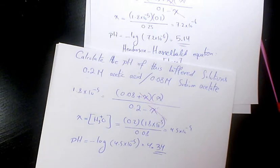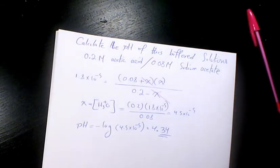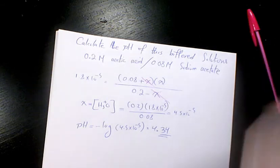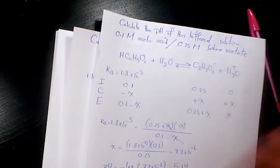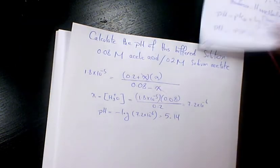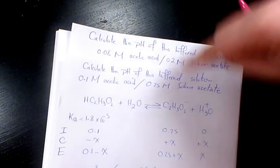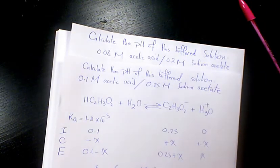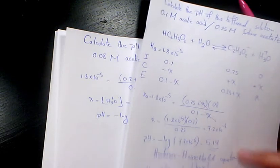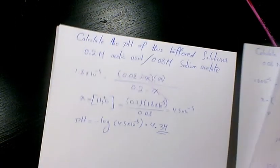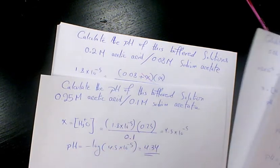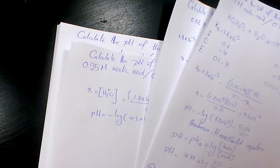We calculated the pH of these four different solutions. Something very interesting: the pH of parts A and C are the same at 5.14, and the pH of parts B and D are the same at 4.34. Even though the concentrations are different, the ratio of acid to conjugate base concentration is the same in each pair — so the pH remains the same. I hope you enjoyed this video. Please leave a comment if you have any questions. Thank you for watching and have a great day.